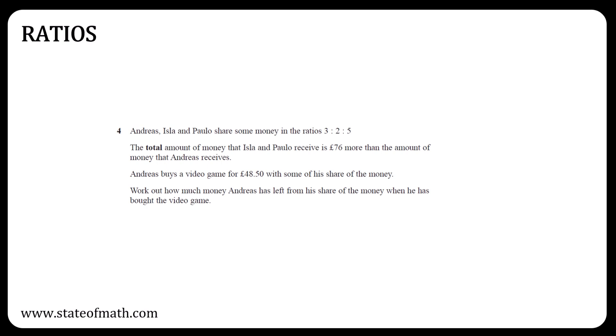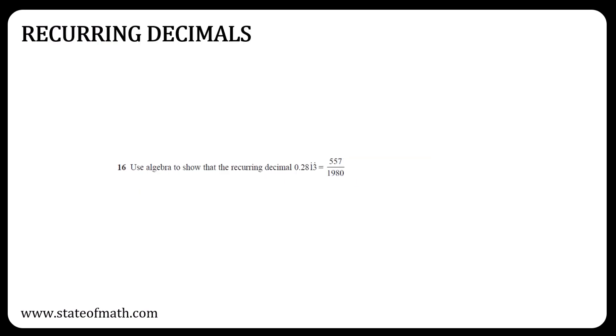There's a small chance of a direct proportion question in Paper 2H, but that chance is very small. No ratio question in Paper 1H, so a must-revise topic for Paper 2H. Another must-revise topic is recurring decimals.